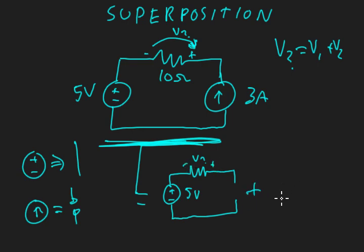And we're going to add the same circuit, only this time we're considering the current source in isolation. The resistor in both cases is still 10 ohms.